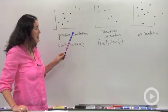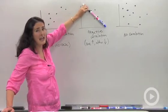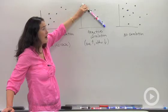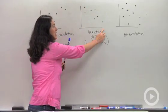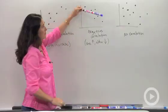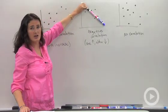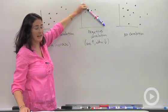Next one, same idea. Negative correlation. It's like a negative slope. As one variable gets larger, like this guy gets larger, this one's getting smaller. As one of them gets larger, the other one gets smaller. That's called a negative correlation.